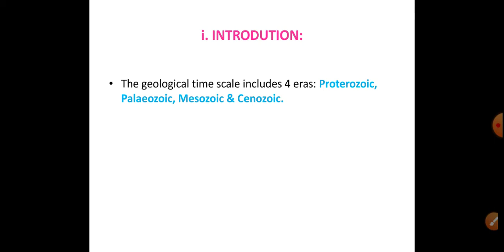To start with the introduction: the geological time scale includes how the earth was formed, how mountains were formed, soil, rock, and rivers — this is geology. The time scale tells us at what time certain things evolved: when rocks formed, when soil formed, when fishes got evolved, when birds got evolved. This is called your geological time scale.